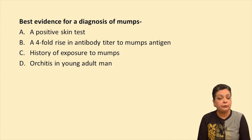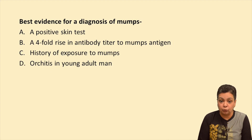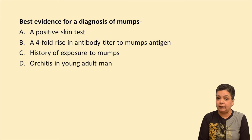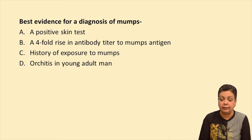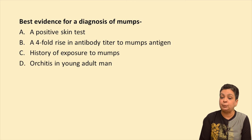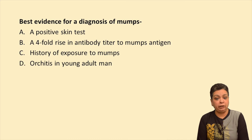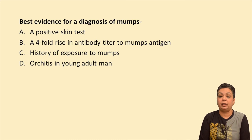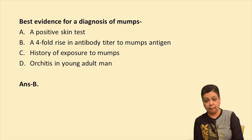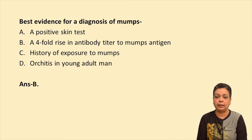Question: Best evidence for a diagnosis of mumps is which of the following? A positive skin test — there is no such test. A four-fold rise in antibody titer to mumps antigen — that is the correct answer, with IgG antibody rising between paired sera. History of exposure to mumps — not reliable as many infections are asymptomatic. Orchitis in a young adult — not definitive. The answer is B: a four-fold rise in antibodies to the mumps antigen.